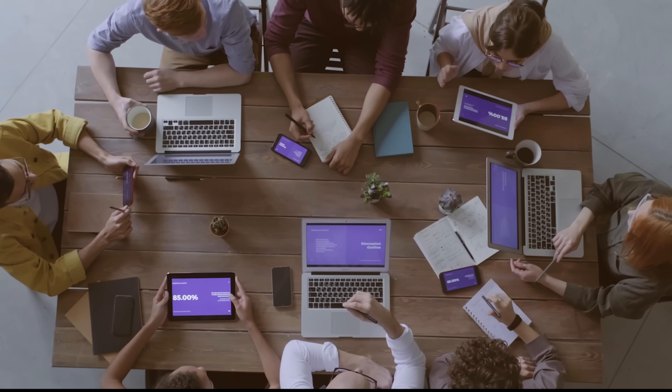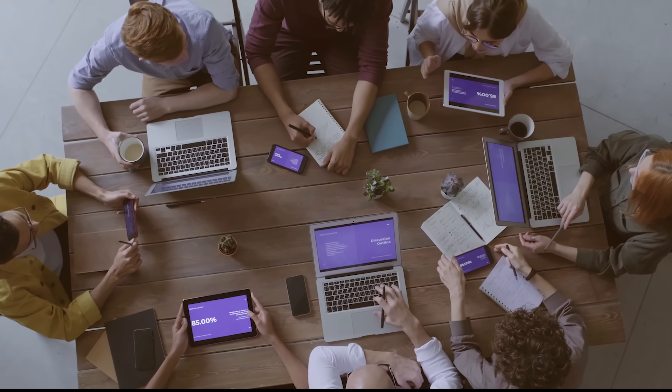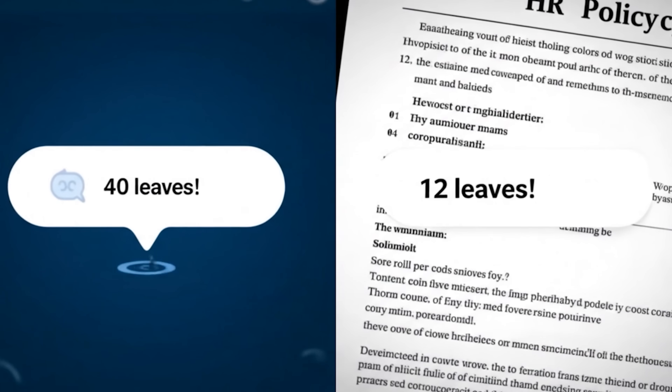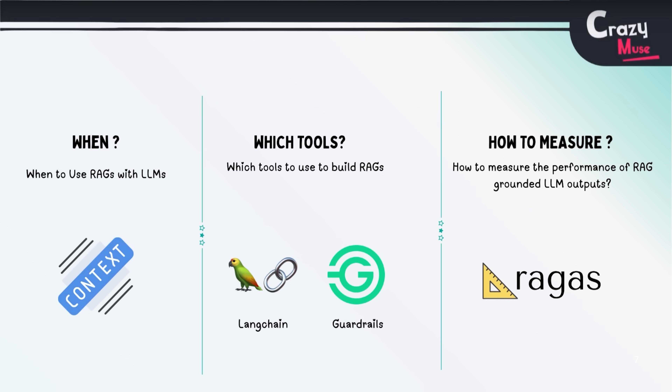Imagine that you are building an HR assistant for your company and it confidently gives incorrect leave data — let's say you have 60 leaves in a year. That sounds very unreal, right? In this video we're going to learn not just about this problem but also how it can be solved and measured.